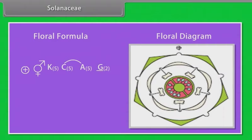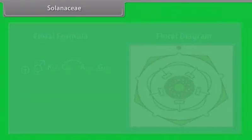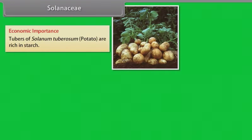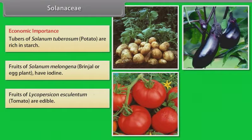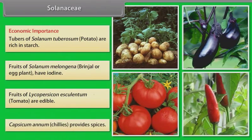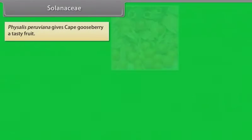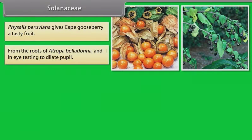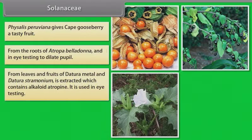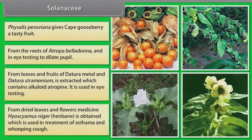Economic importance of Solanaceae: tubers of Solanum tuberosum (potato) are rich in starch. Fruits of Solanum melongena (brinjal/eggplant) and Lycopersicon esculentum (tomato) are edible. Capsicum annuum (chili) provides spices. Physalis peruviana gives cape gooseberry. From the roots of Atropa belladonna and from leaves and fruits of Datura metal, alkaloid atropine is extracted, used in eye testing to dilate the pupil. From dried leaves and flowers of Hyoscyamus niger (henbane), medicine is obtained used in treatment of asthma and whooping cough.